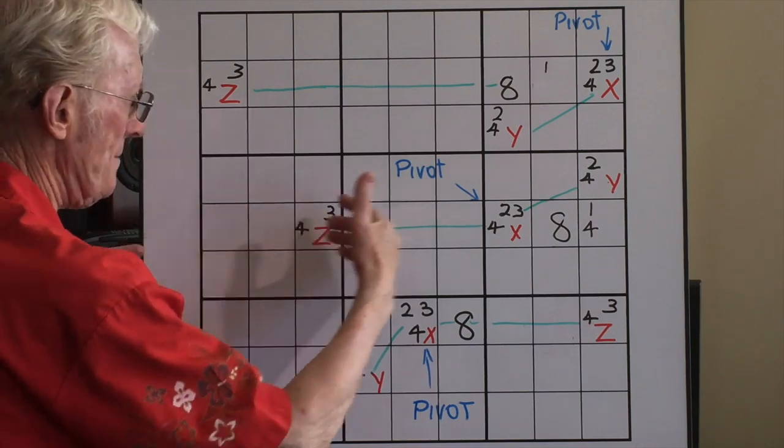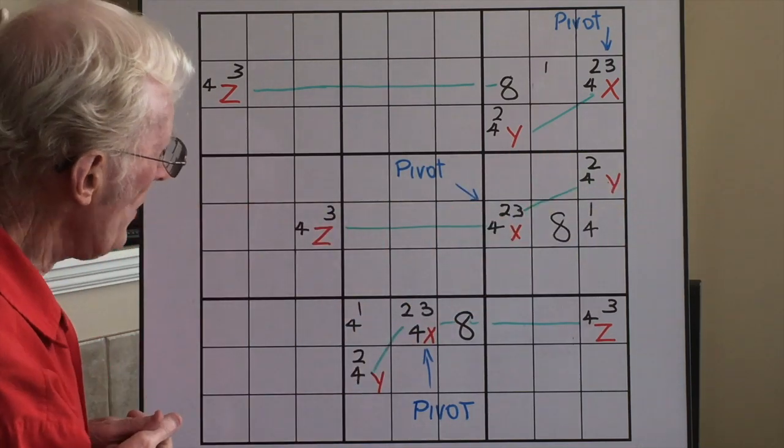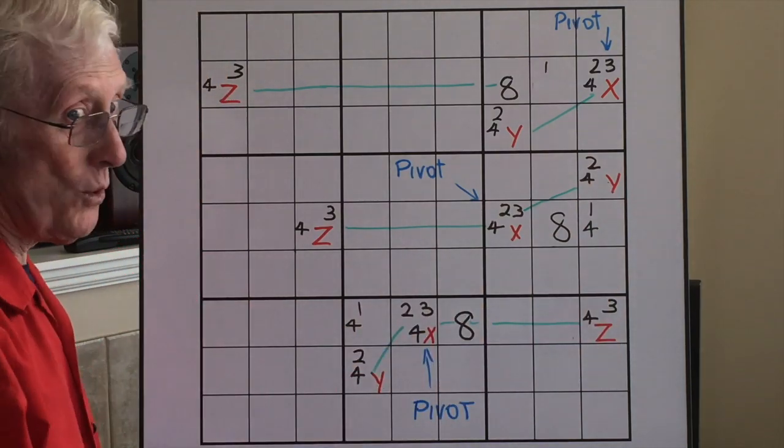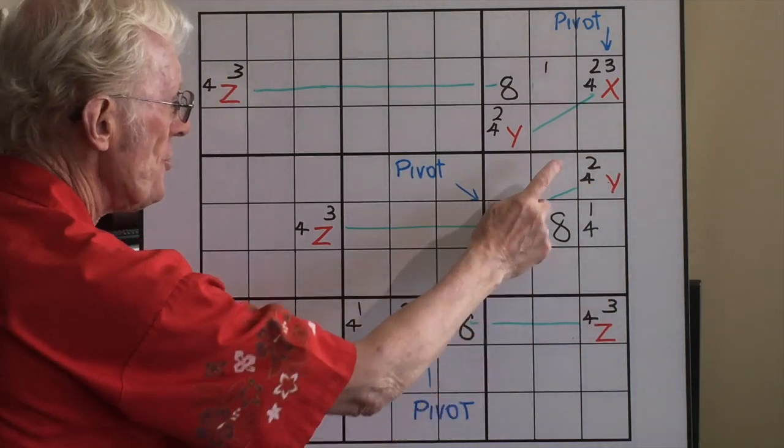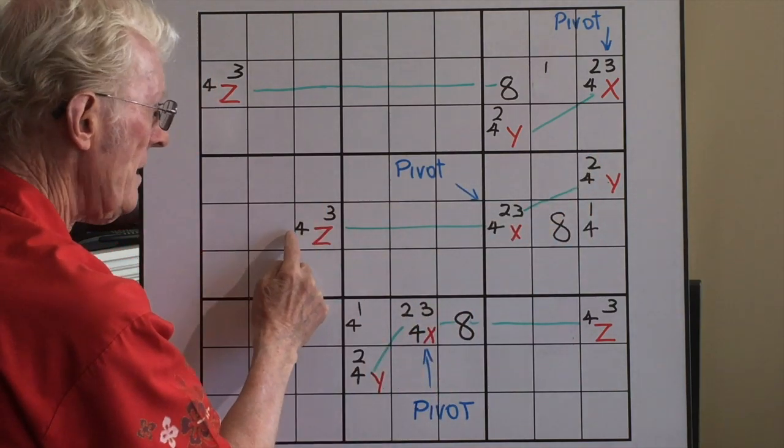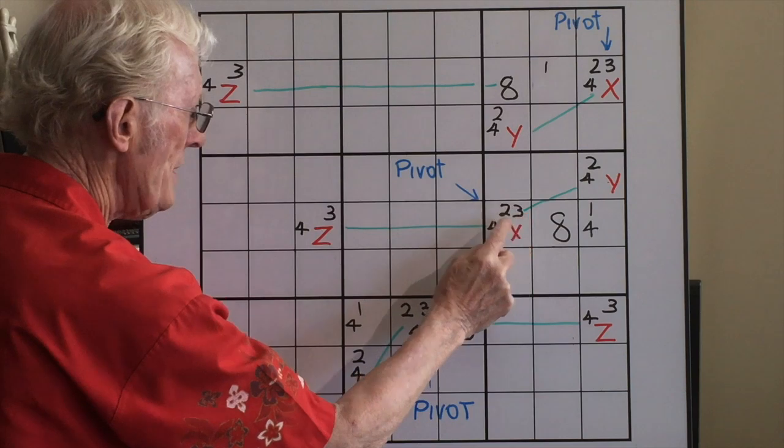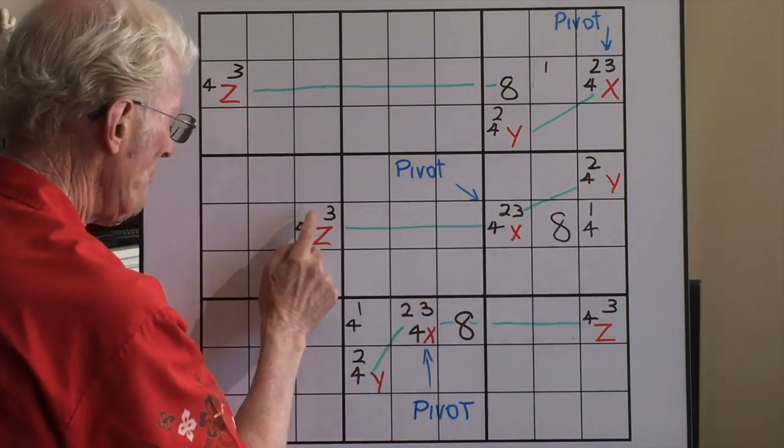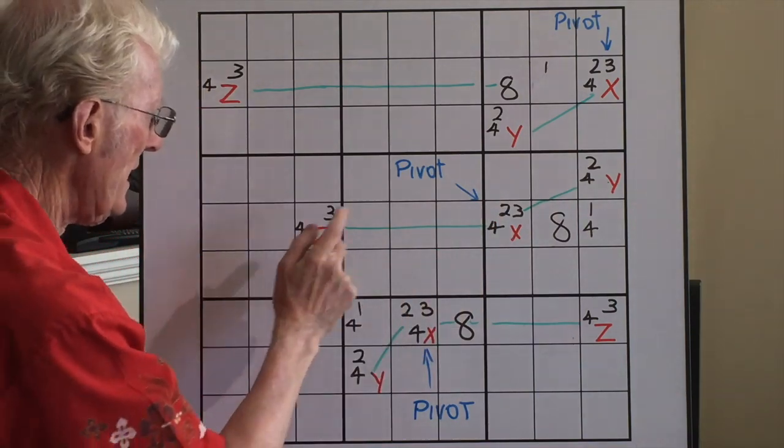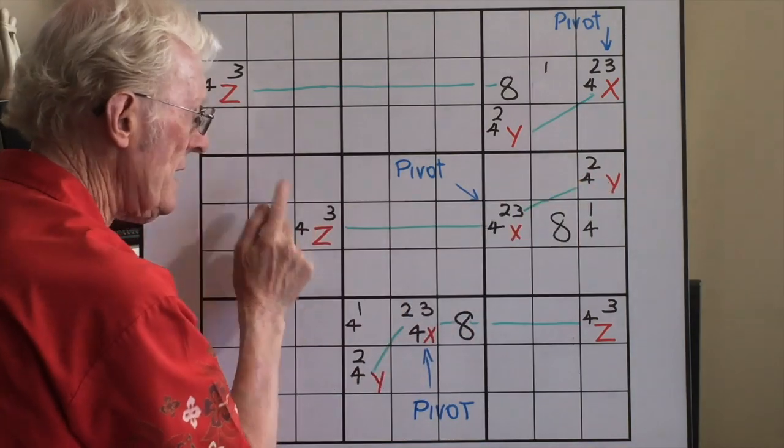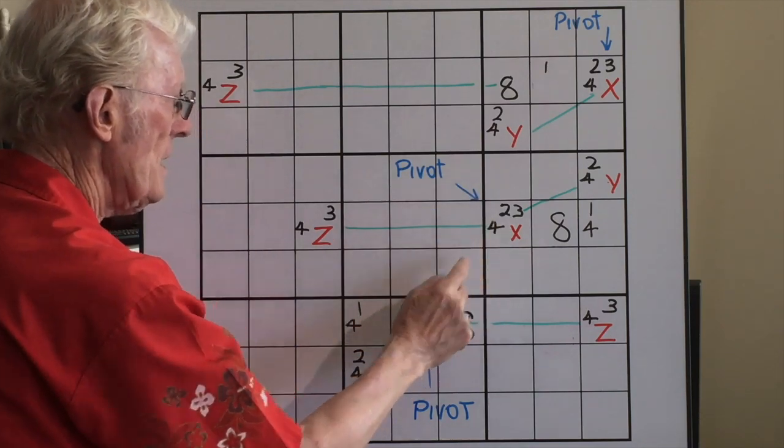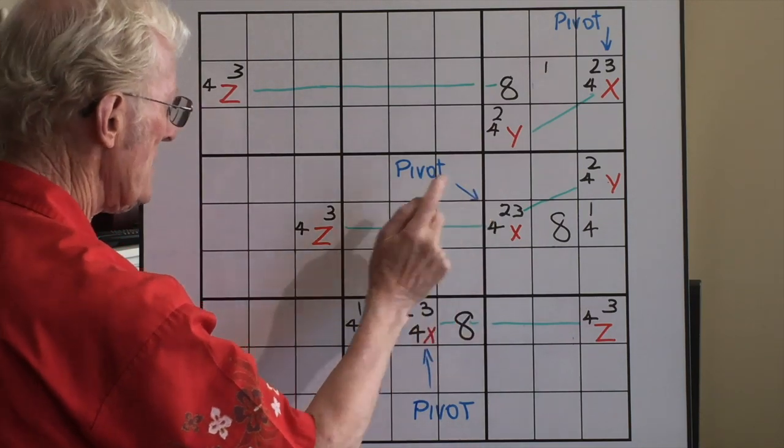Now let's go to this one here. We found in this block, again, it was a two, three, four, and a two, four here, and a three, four here. So we have a two, three, four, a two, four, and a three, four. Once you've found that pattern, you've got an X, and a Y, and a Z. Then you know that this is the pivot.